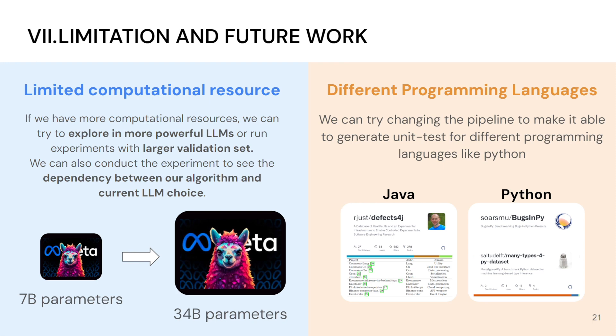And secondly, with more time and resources, we could try changing the pipeline to make it able to generate unit tests for different programming languages like Python. Java is a statically typed language compared to Python, which is a dynamically typed language. And we figured that there would be more challenges to deal with in dynamically typed languages like Python.